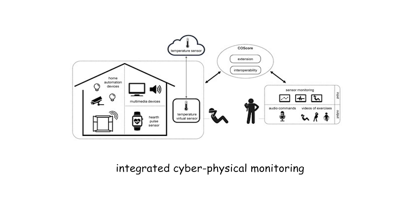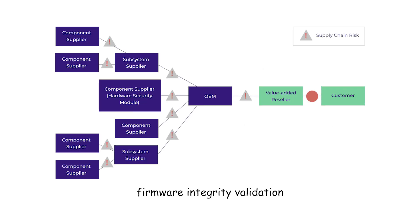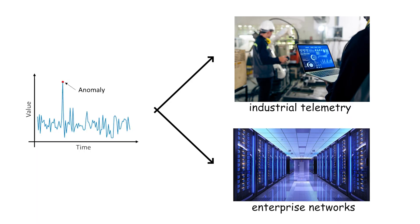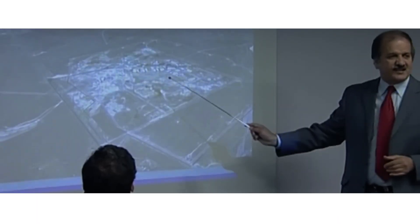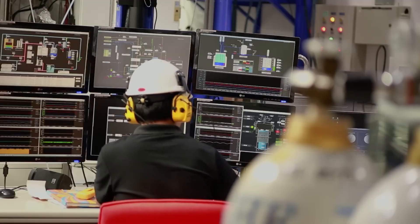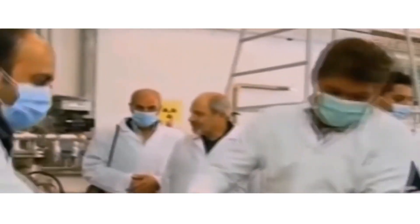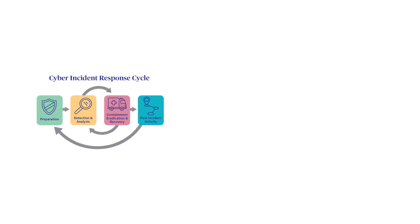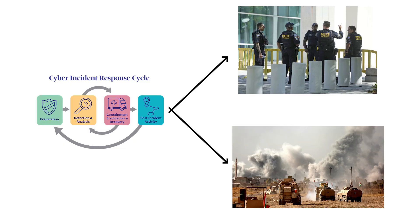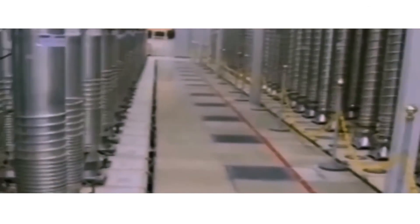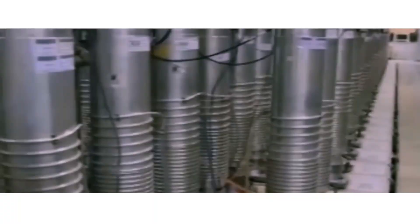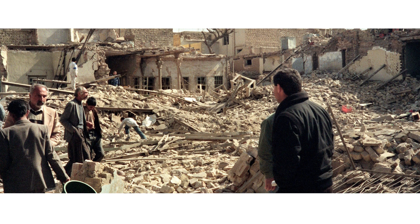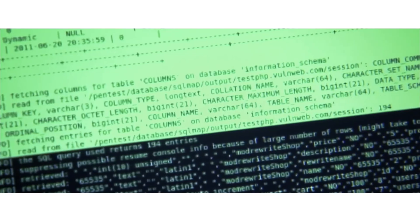Detection requires integrated cyber-physical monitoring, firmware integrity validation, and anomaly detection across industrial telemetry and enterprise networks. Defenders must harden firmware, enforce hardware attestation, coordinate vendor and allied intelligence sharing, and build cross-domain contingency plans linking cyber response with civil defence and kinetic options. The highest-tier weapons carry the greatest political risk: their use can reshape conflict boundaries, cause mass collateral damage, and accelerate proliferation of similar capabilities.